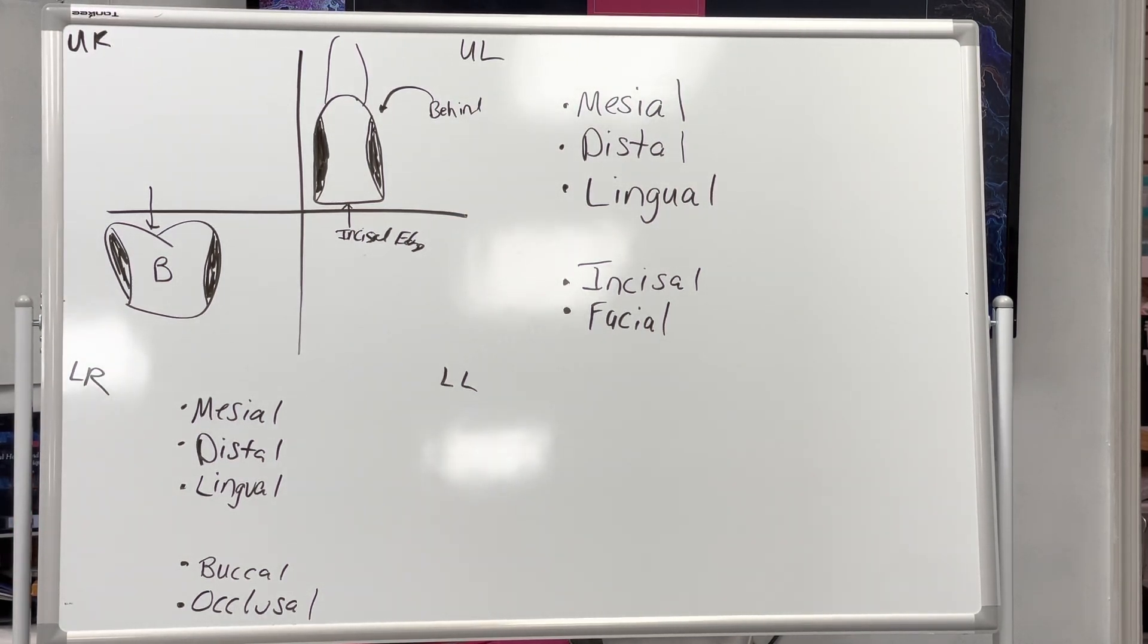So how many surfaces of the tooth are there? Five. If it's an anterior tooth, what are the five surfaces? Mesial, distal, lingual, incisal, facial. Very good.